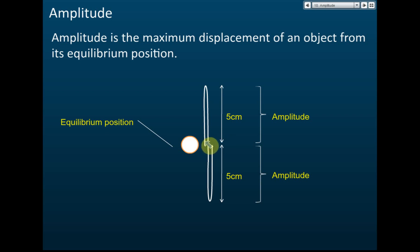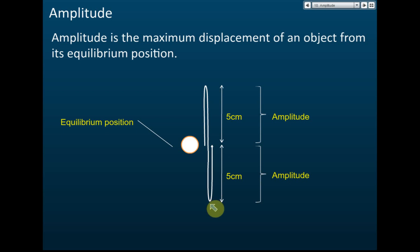Amplitude is always measured from the equilibrium position, which is usually at the center. For an oscillating system moving up and down, the maximum height or lowest point from the equilibrium position is the amplitude.